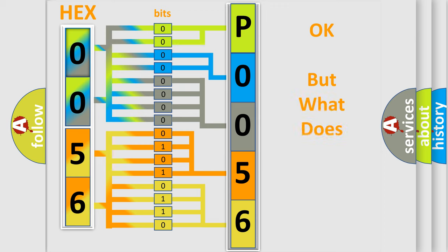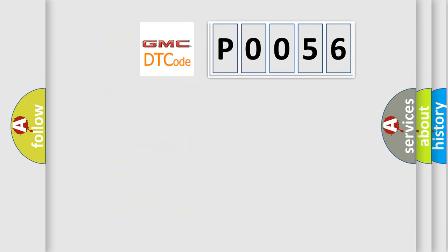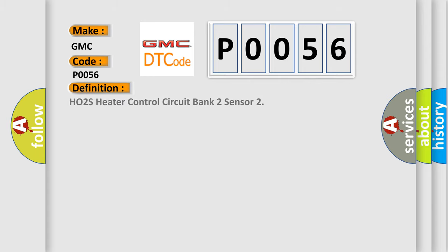We now know in what way the diagnostic tool translates the received information into a more comprehensible format. The number itself does not make sense to us if we cannot assign information about what it actually expresses. So, what does the Diagnostic Trouble Code P0056 interpret specifically for GMC car manufacturers? The basic definition is: HO2S Heater Control Circuit Bank 2 Sensor.